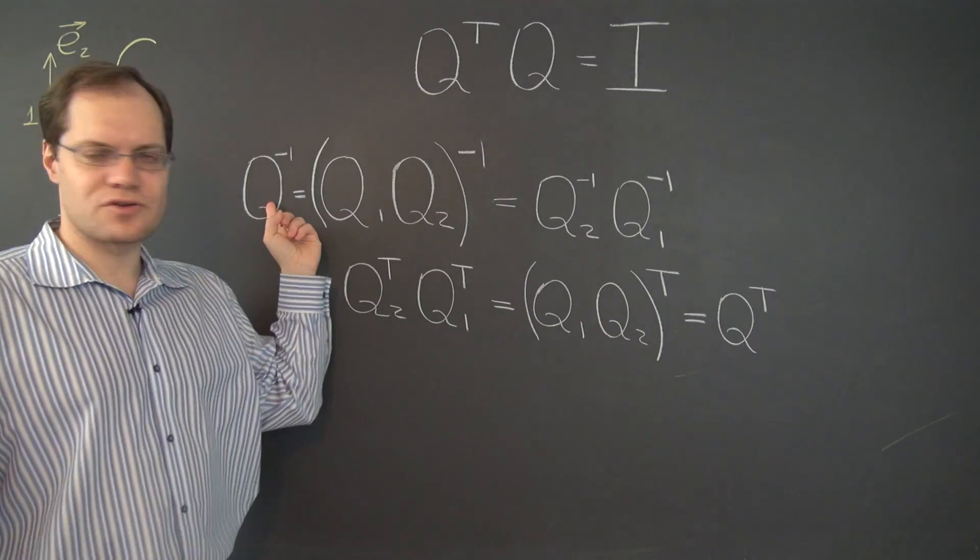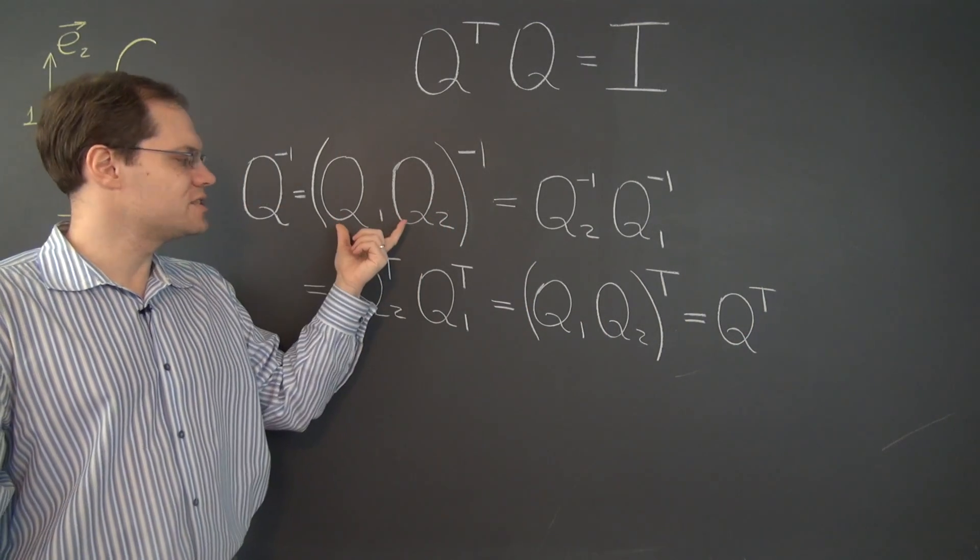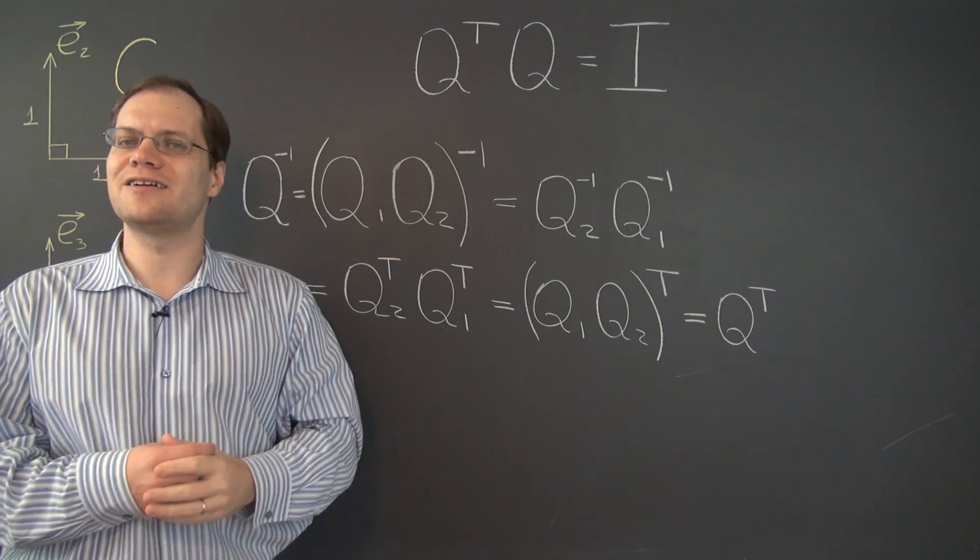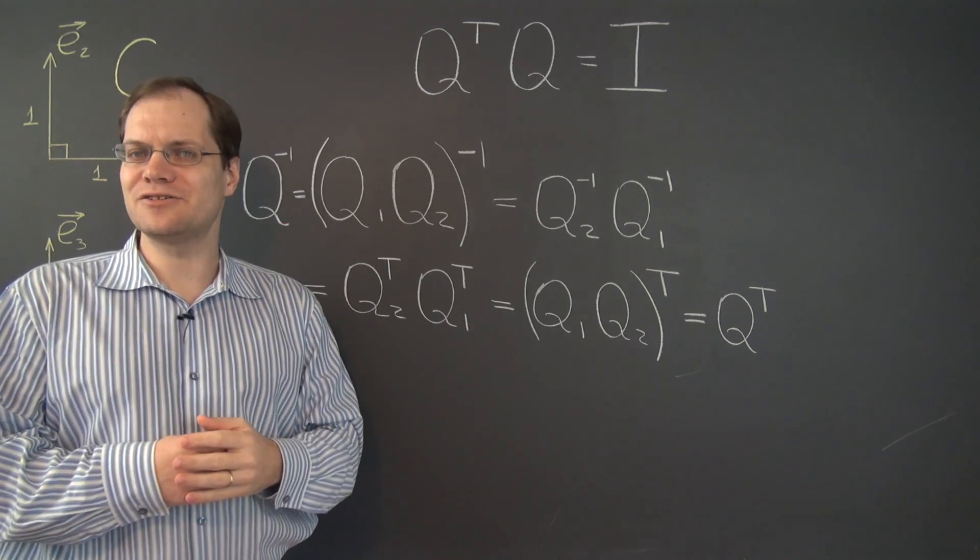So Q is an orthogonal matrix. In other words, the product of two orthogonal matrices is itself an orthogonal matrix, as we set out to prove.